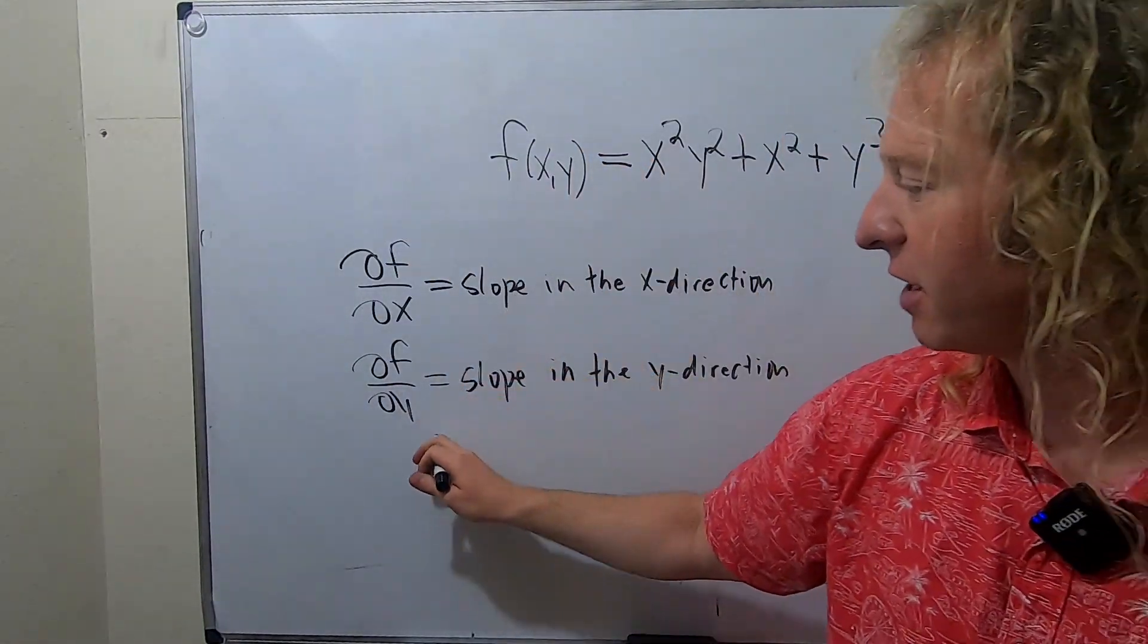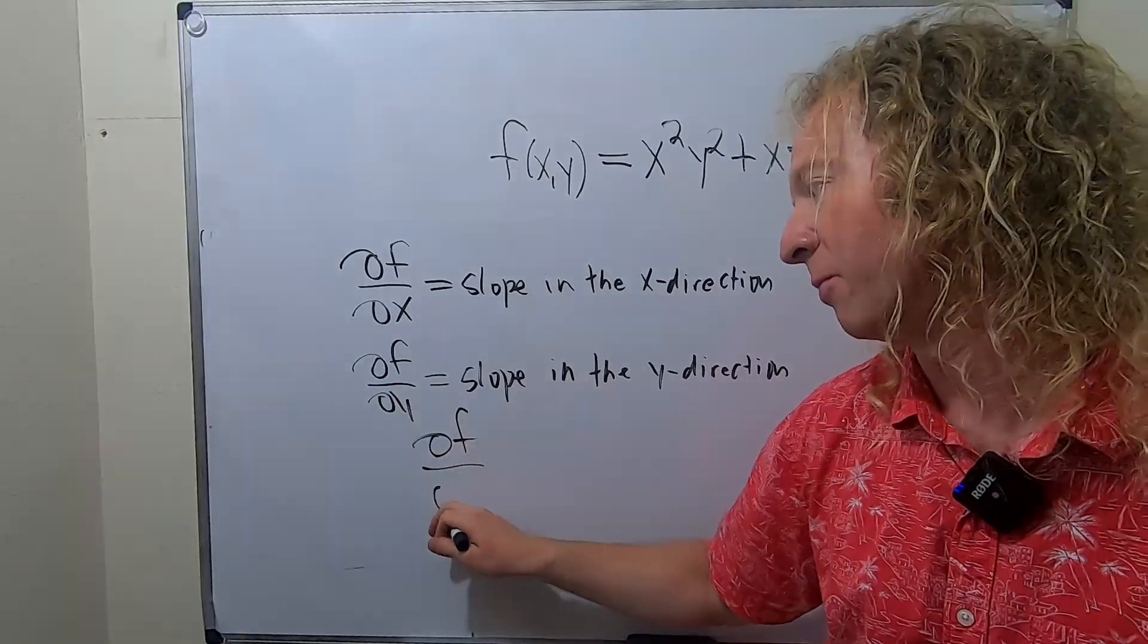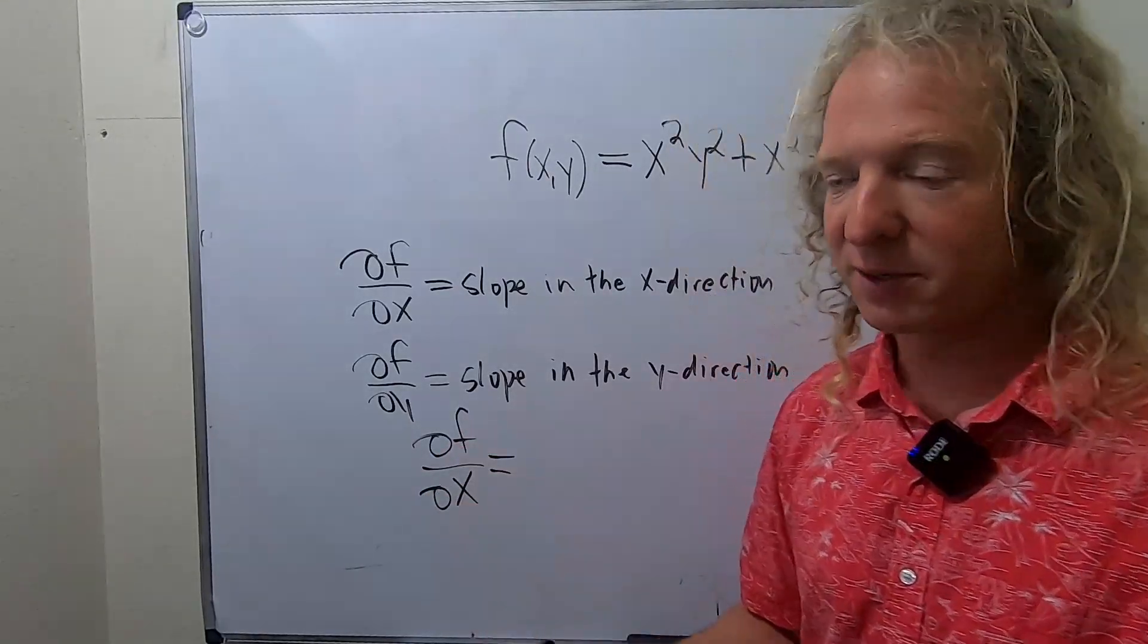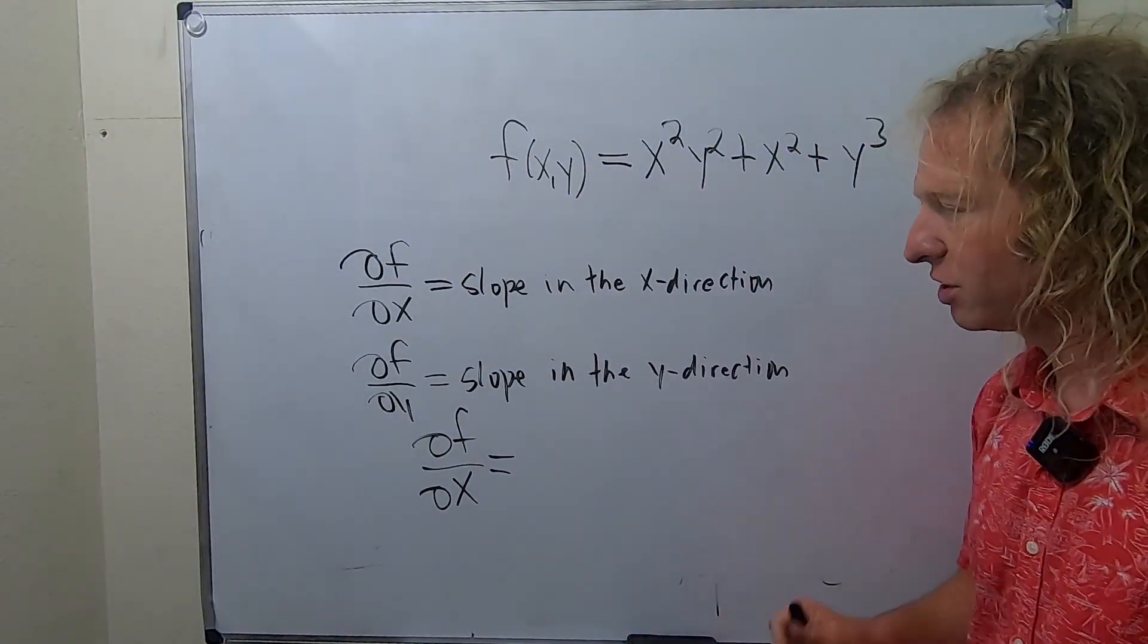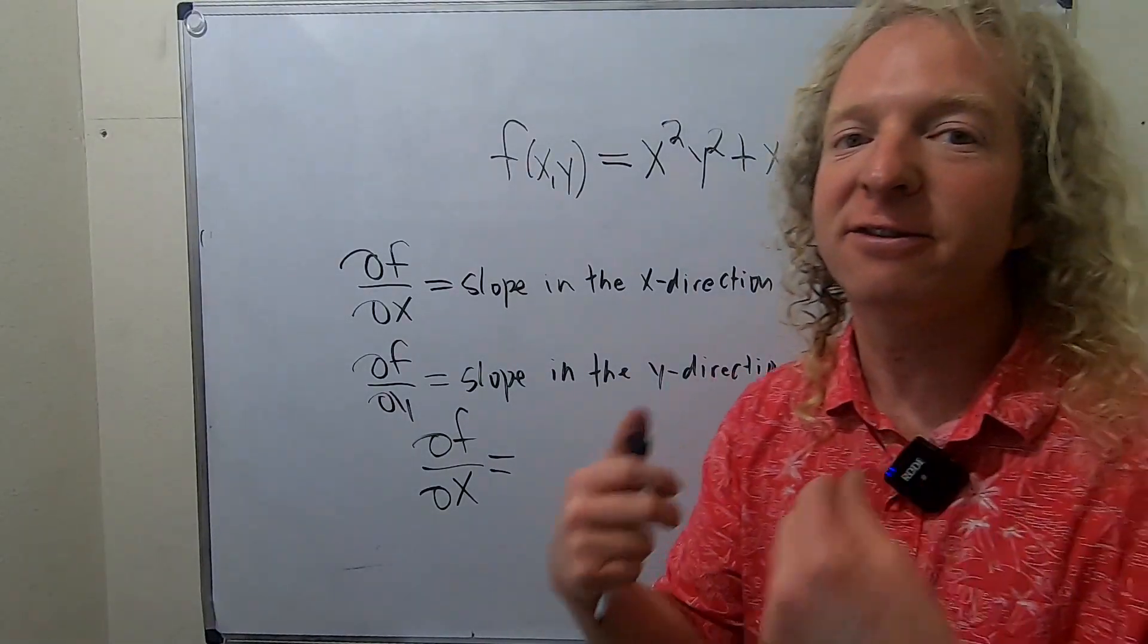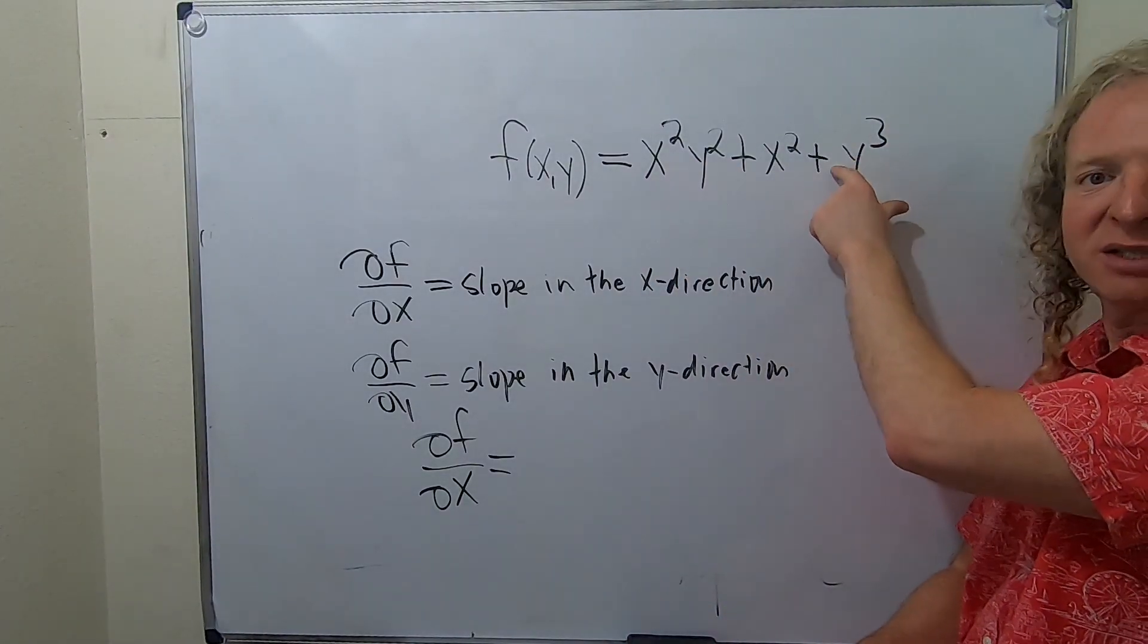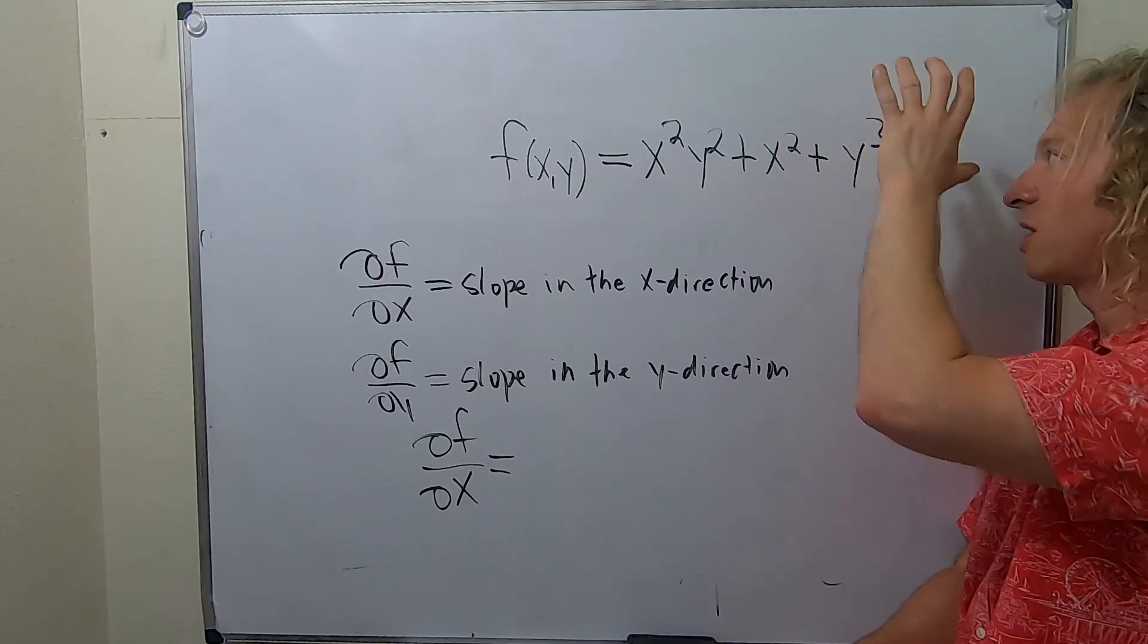Let me show you really quickly. Let's find ∂f/∂x. It's really simple. We're finding the partial derivative of f with respect to x—that's the slope or rate of change in the x direction when y is fixed. So we're treating y as a constant. That means when we differentiate this, this is a constant, so this is going to be 0.